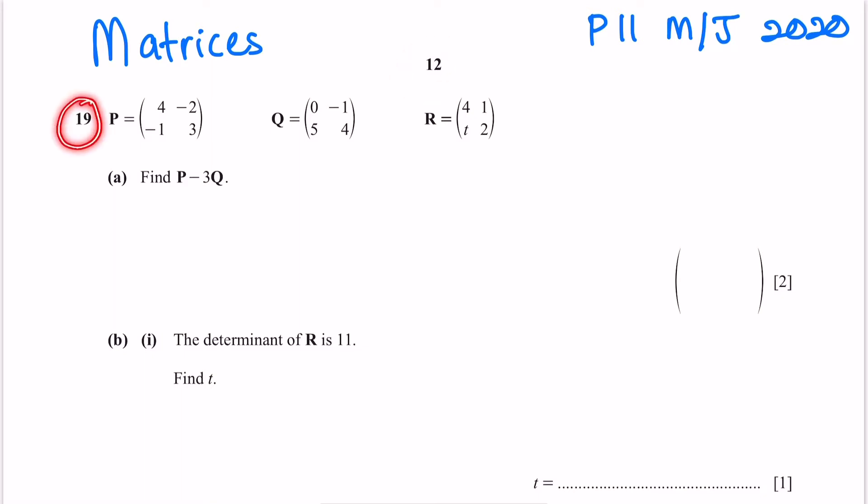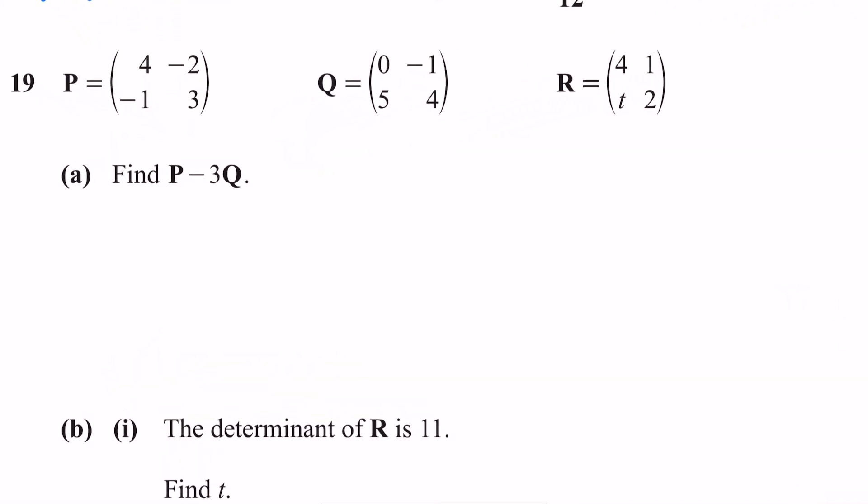Let's begin. For question part a, you're asked to find P minus 3Q. This is a formula you need to substitute with the matrix given here. You are given P, Q, and R. The matrix of P is 4, -2, -1, and 3. 3Q: Q is 0, -1, 5, and 4.